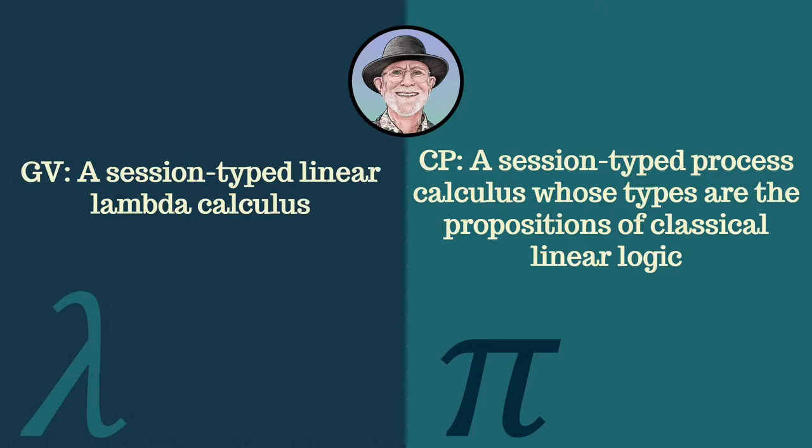Now, Caires and Pfenning work in the setting of intuitionistic linear logic. In 2012, Phil Wadler introduced CP, a session-type process calculus built around classical linear logic, and also GV, a session-type functional programming language inspired by the work of Gay and Vasconcelos. Unlike CP, GV has a distinction between the program that the user writes and the state that arises during execution. Now, so far I've mentioned session types in passing, but let's see some concrete ones.